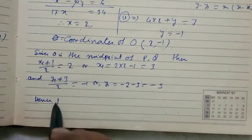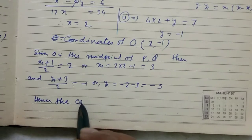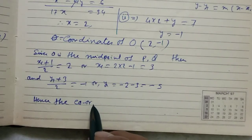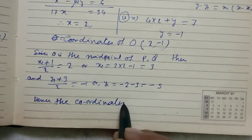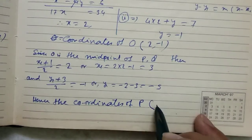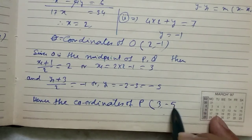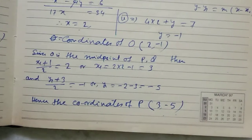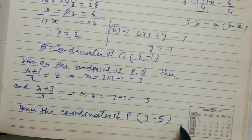Hence, the coordinates of Q equals (3, -5), and that is the answer.